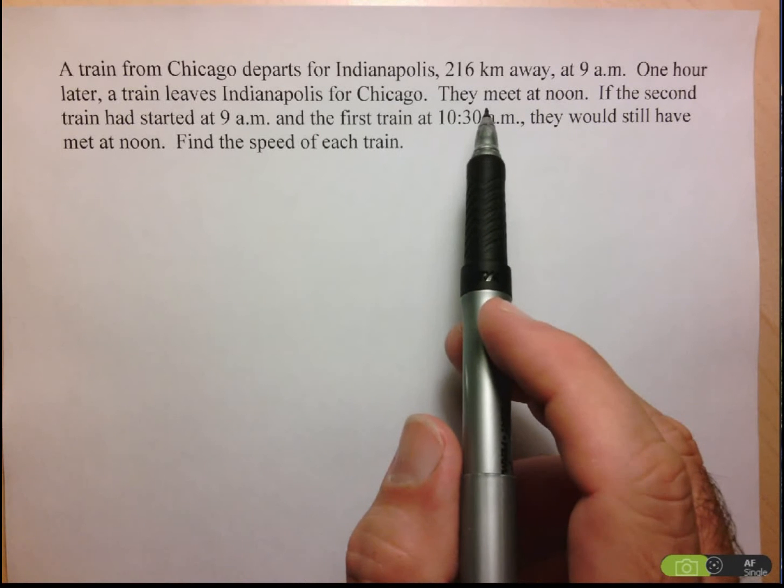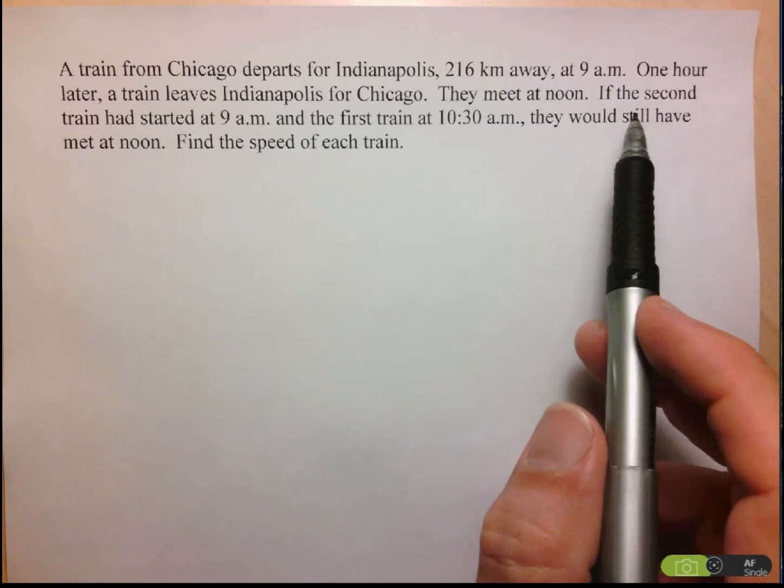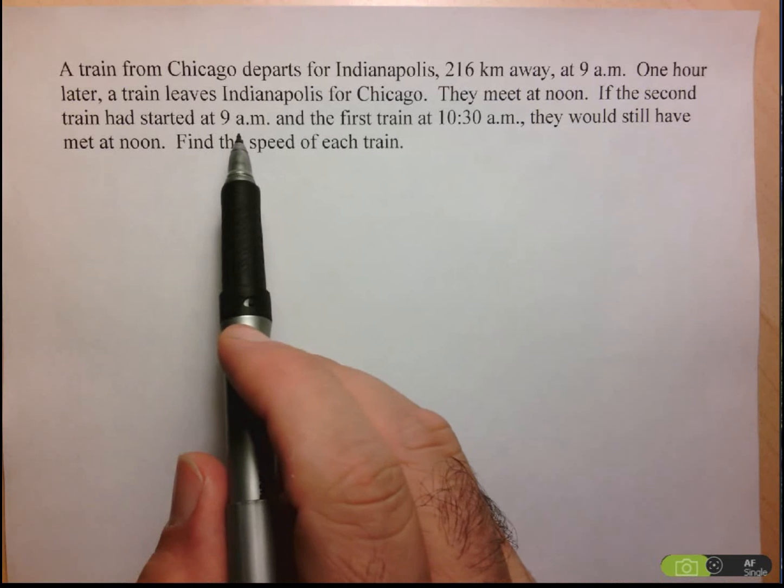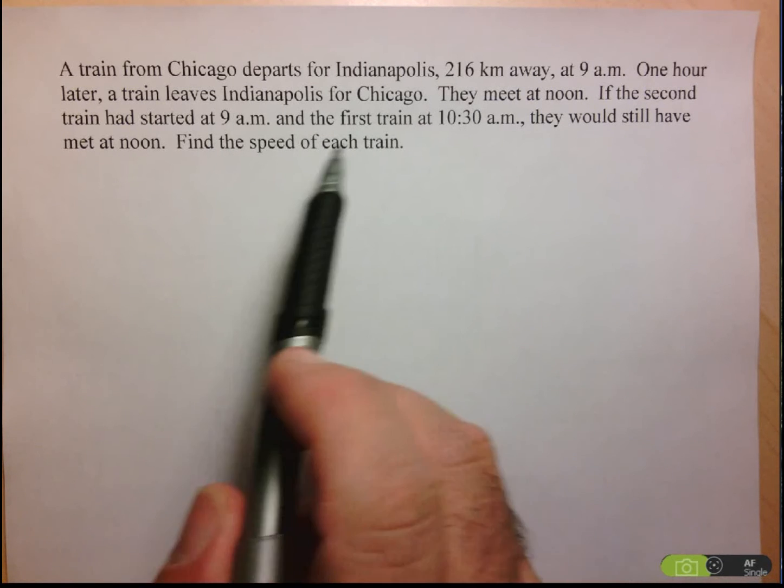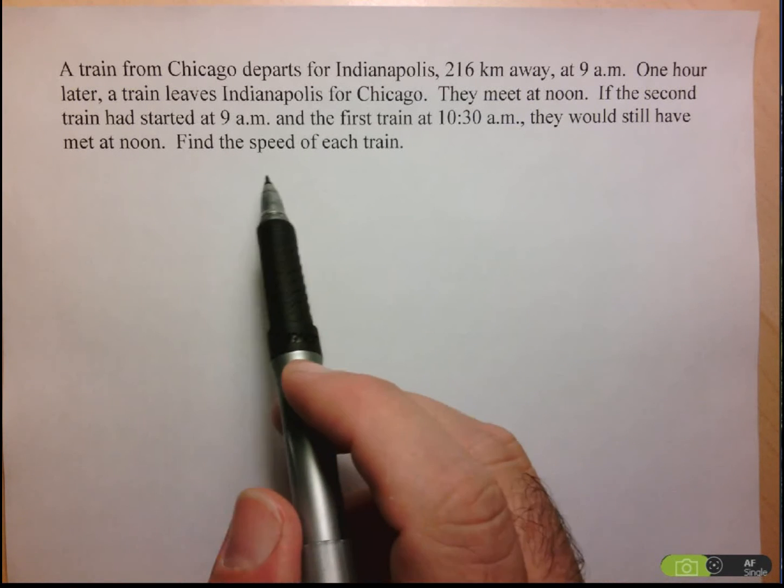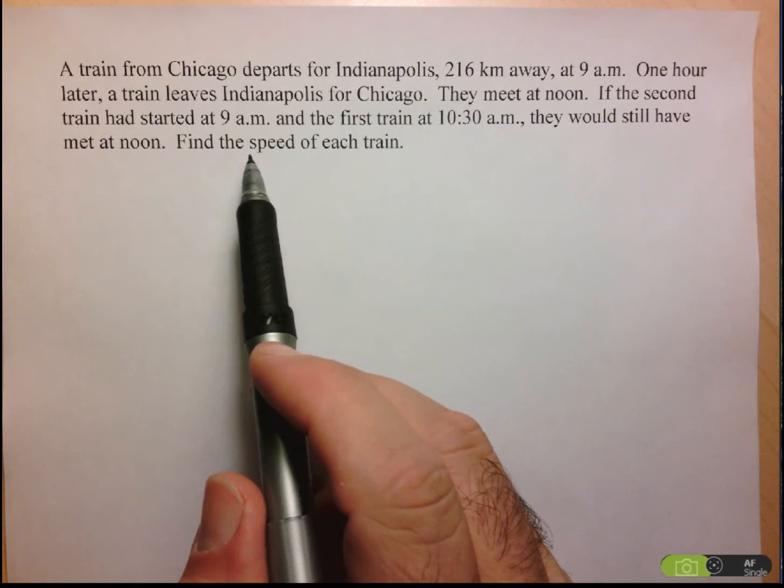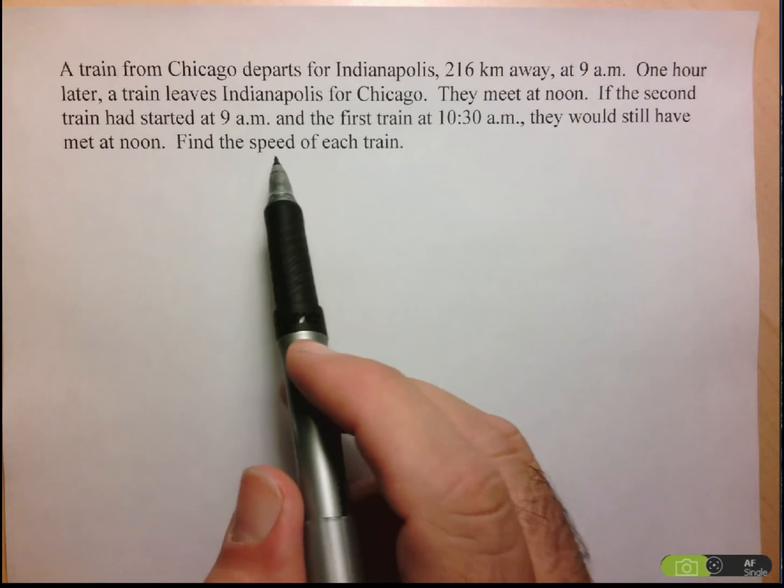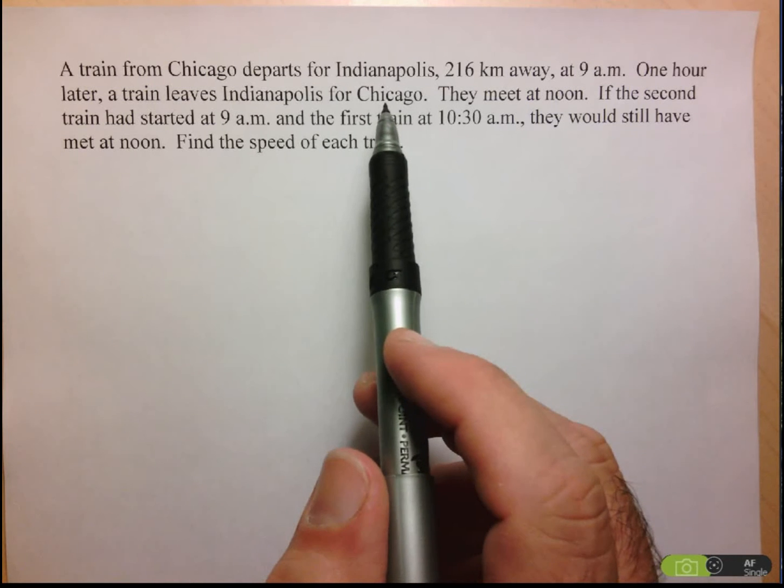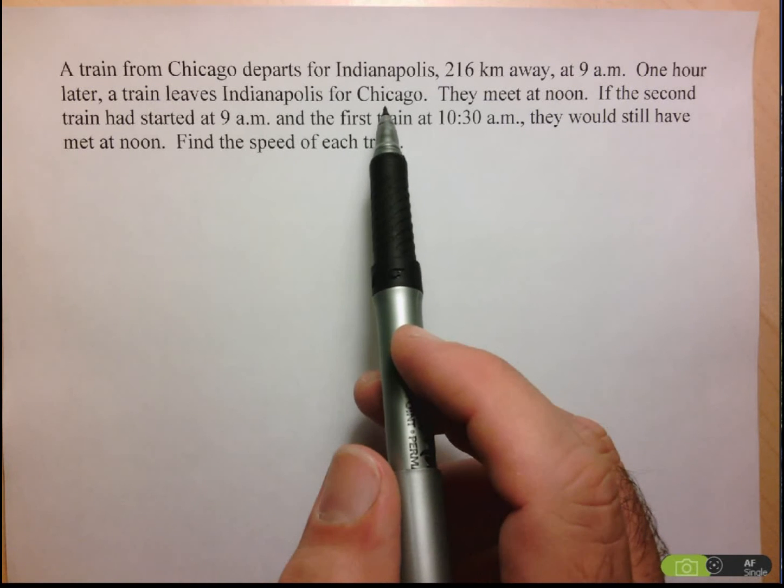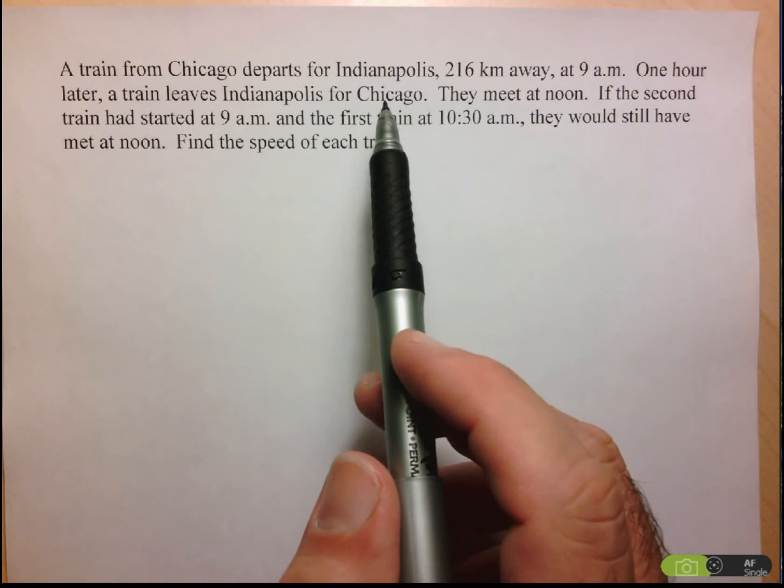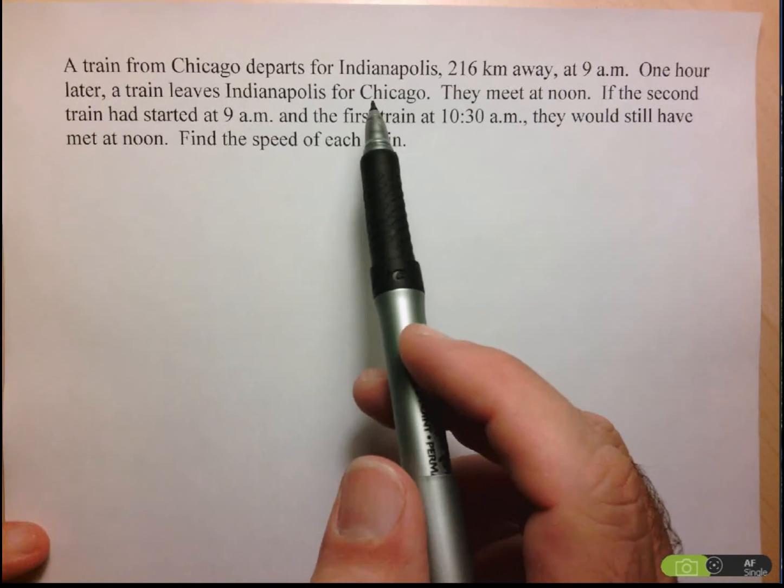Then I'm given a second scenario. I'm told, well, if the second train had started at 9, and the first train later, say at 10:30, they would still have met at noon, and we want to find the speed of each train. So the first thing I notice in this problem here is that we've got two unknowns, the speed of each train, and I'm given two scenarios to work with. So that hints to me that we're probably going to be working with a system of equations with two variables.